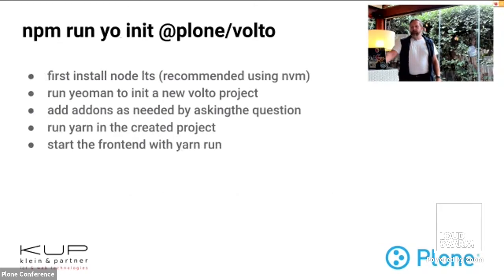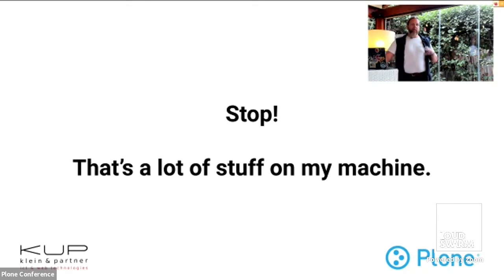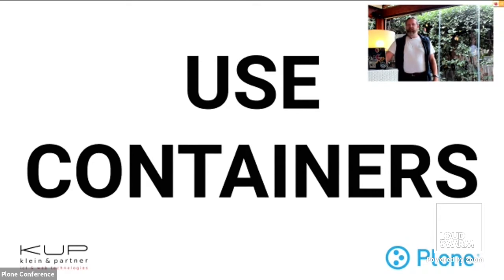For the front end, it's roughly `npm run` in `@plone/volto` — a tool to automate things in Node and JavaScript applications. Then you run a command to create the project and start the front end. But if you don't want to manage a Python virtual environment and a Node environment manually — because it sounds complex and it is — then use containers. That's the base idea.